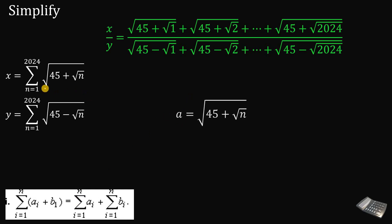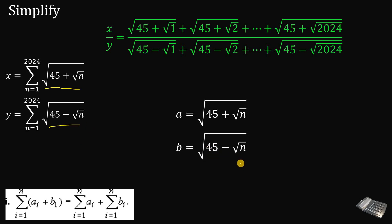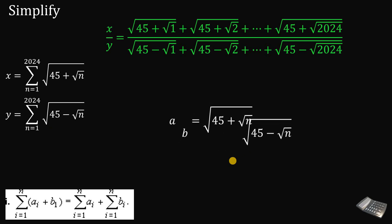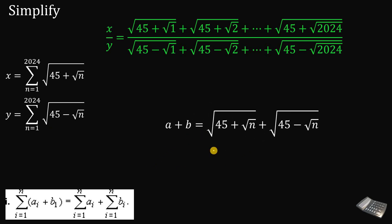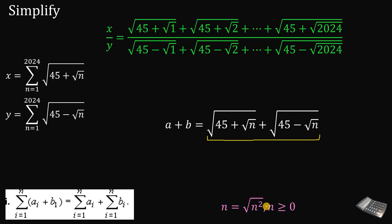Let a be equal to square root of 45 plus square root of n, and let b be equal to square root of 45 minus square root of n. What we're going to do is add these two equations. So a plus b equals square root of 45 plus square root of n, plus square root of 45 minus square root of n. Take note that the expression on the right-hand side is greater than 0.